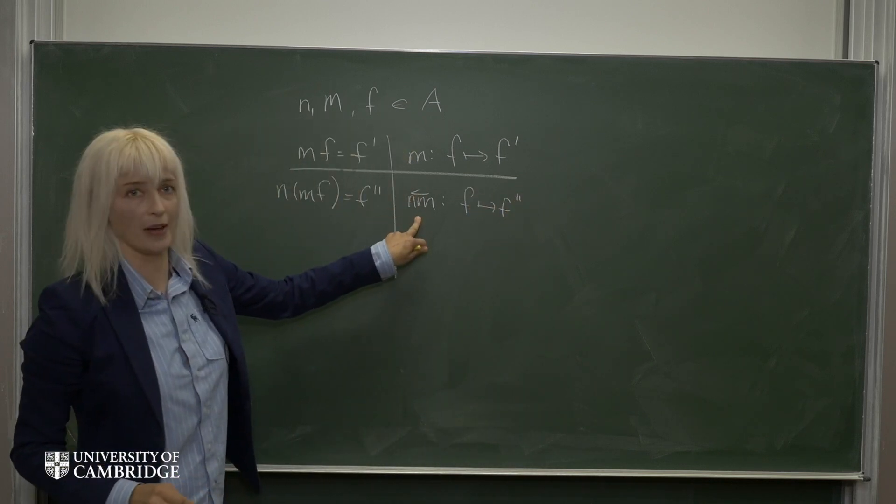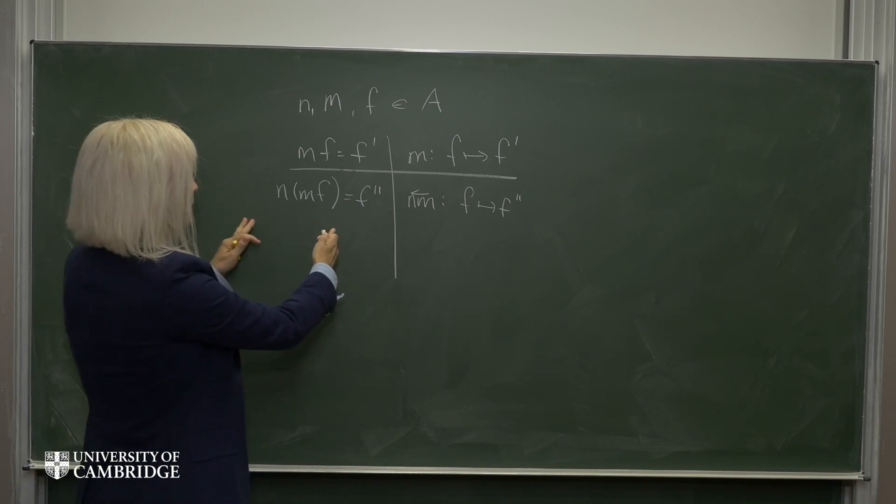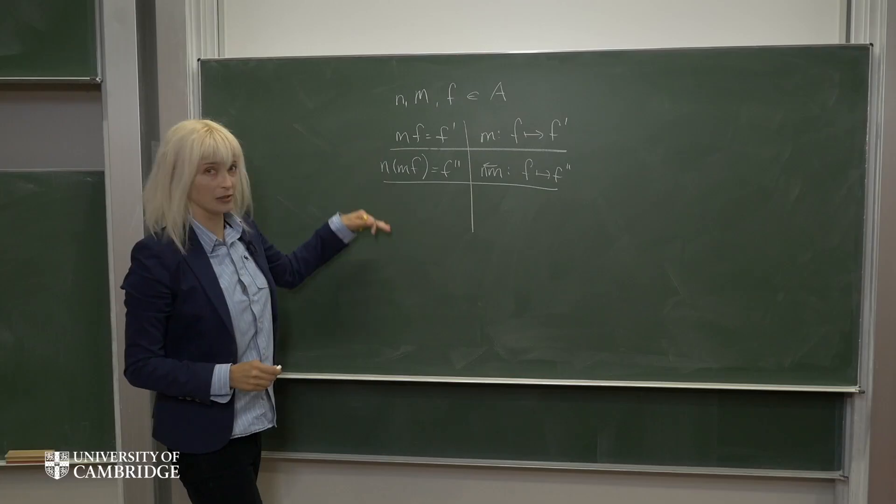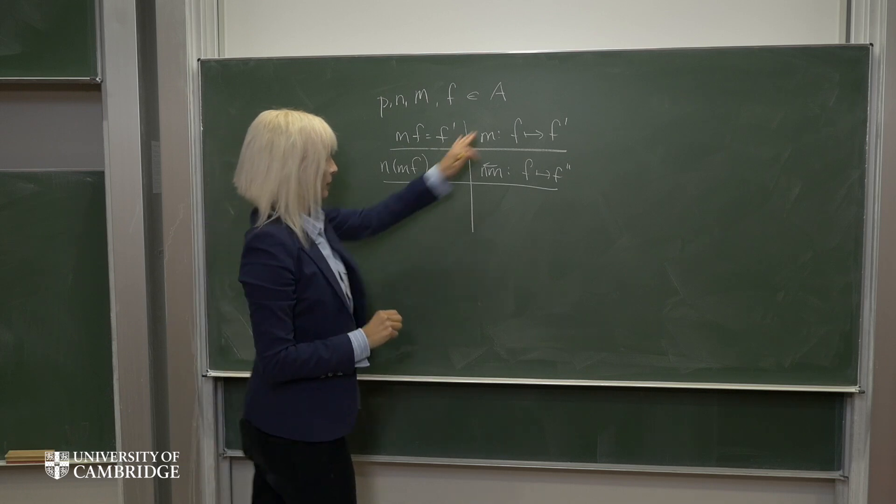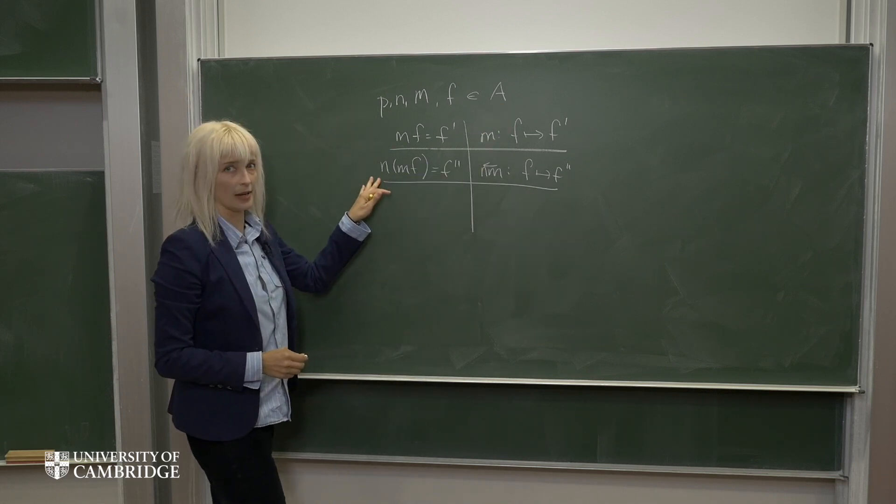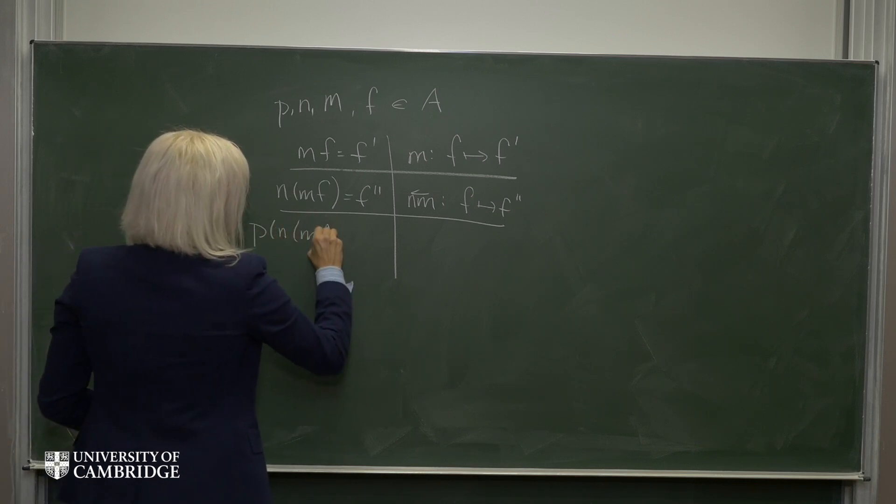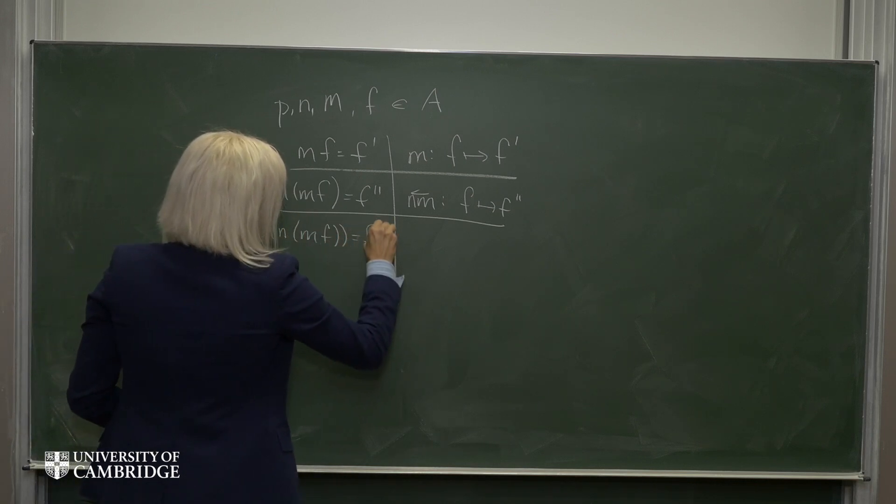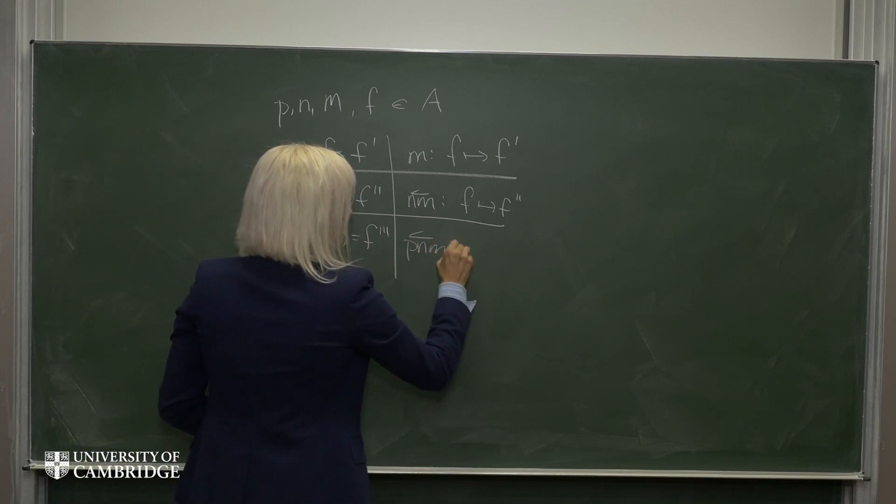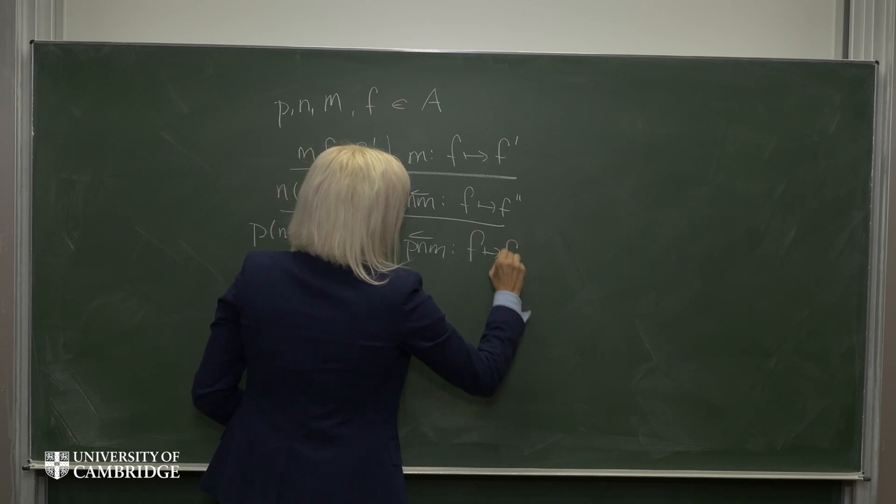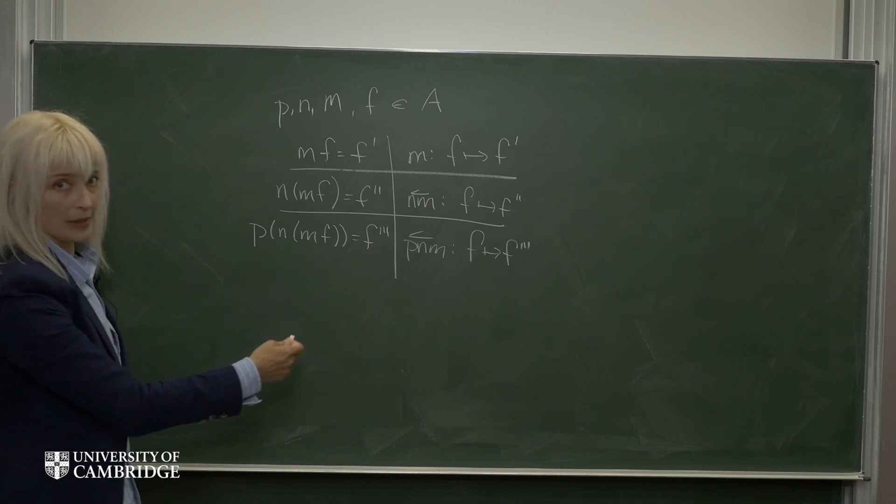So I've written an arrow over top of NM here, just to show that the multiplication starts at the right and it moves to the left. Now I can continue doing this, so let's take some other element P, also an element of this algebra, and we left multiply it onto NMF. So in this way, we have PNM is a map from F to F triple prime. And we can continue building up these chains.